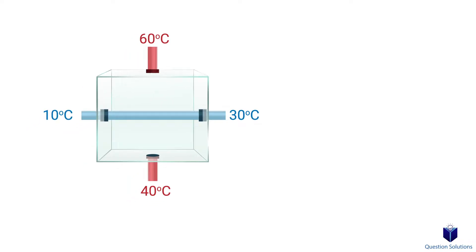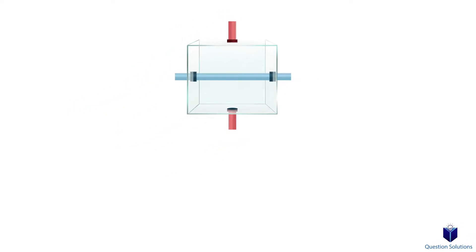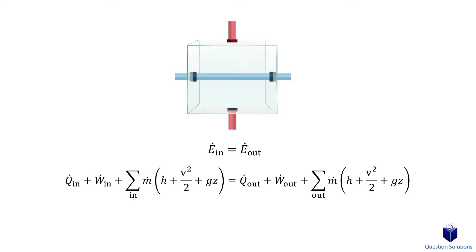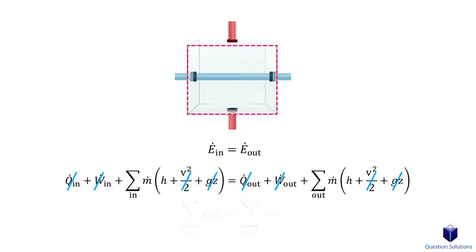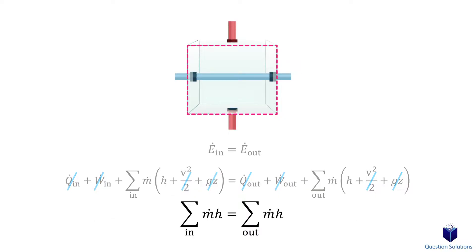Now let's discuss the energy balance of heat exchangers. We start with our energy balance equation and expand it. If we select the whole heat exchanger to be the system, then there is no heat transfer between the system and the surroundings, no work, and potential and kinetic energy is negligible. So our energy balance equation simplifies to just mass flow and enthalpy.